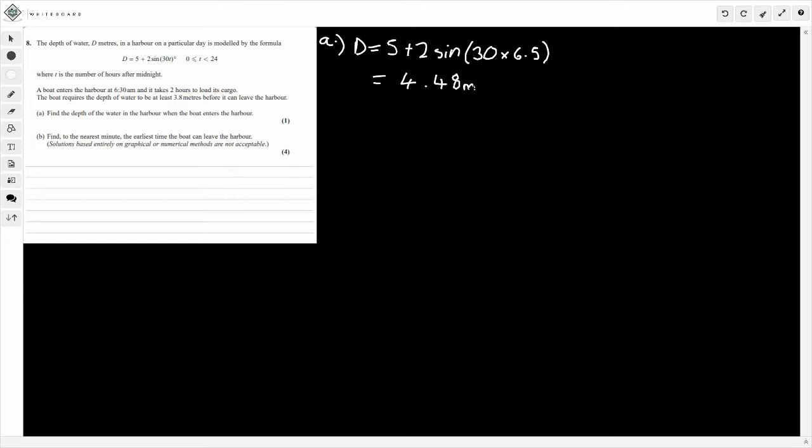So let's be very careful guys. Make sure you include the units, which is metres, because we're told the depth of the water, D metres. And make sure you're in degrees here, we're working in degrees, not gradients. So 4.48 metres. Perfect. So that's part A.